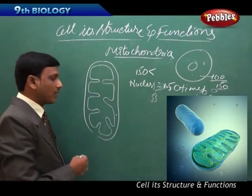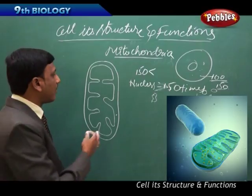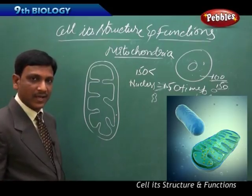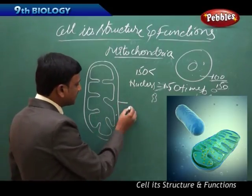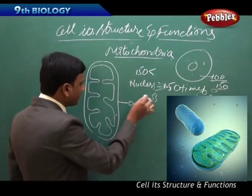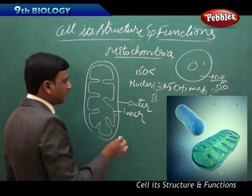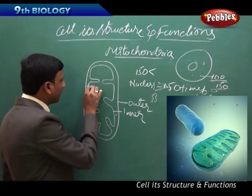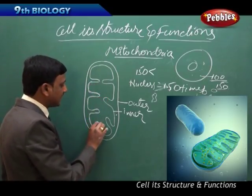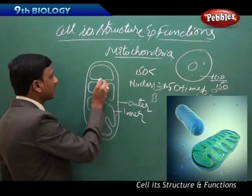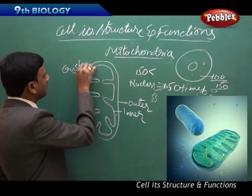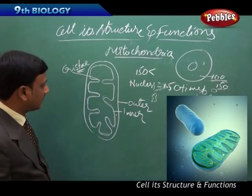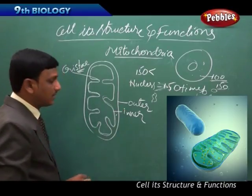Looking at the structure of the mitochondria, it is a membrane-bound organelle with not one but two membranes — an outer membrane and an inner membrane — with some space between them. The inner membrane has many folds called cristae. You are going to learn about these cristae, elementary particles, and other details in higher classes. These are the major structural parts of a mitochondrion.